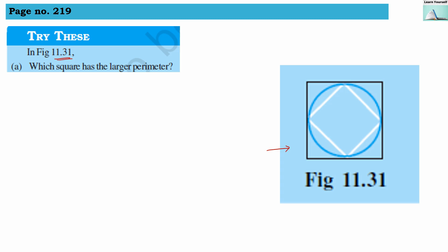So we have two squares here. First is this square and second is this square. Obviously, the second square will have a larger perimeter because this square's sides are larger compared to the inner square. So outer square has larger perimeter.